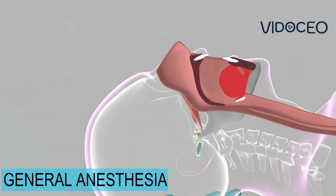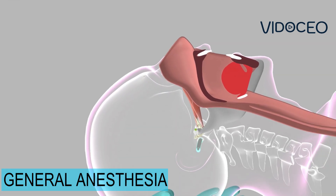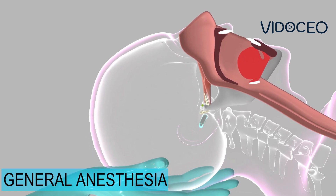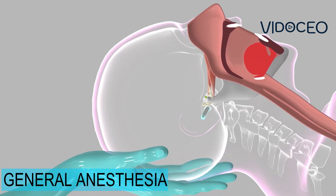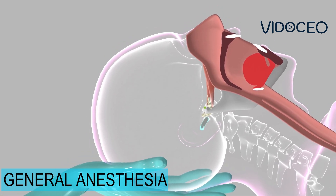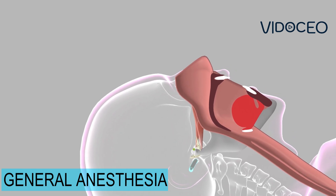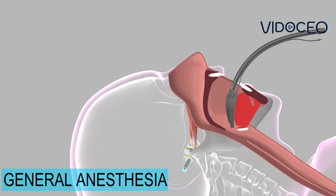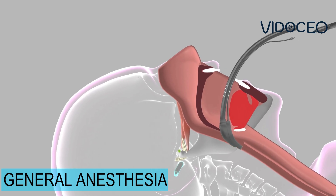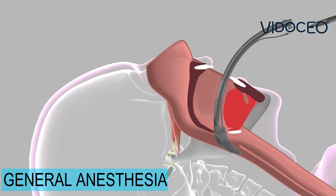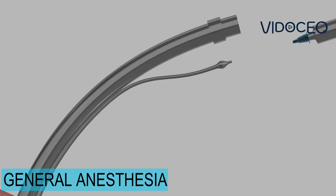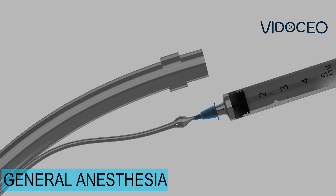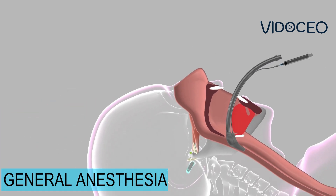Because the medicines relax your muscles, the anesthesia provider will need to place a device to help you breathe. One common device is the laryngeal mask airway, or LMA. The LMA is slid into your mouth and down into the back of your throat. It has a balloon inflation around the end to make a good seal in the back of your throat, to help oxygenated air and anesthesia gas pass easily in and out of your windpipe.